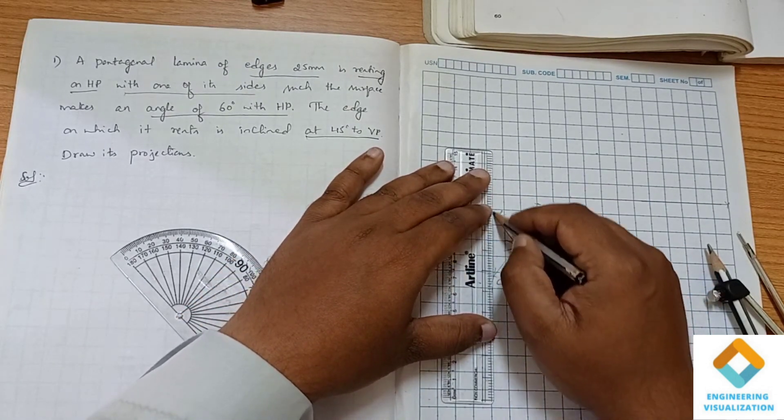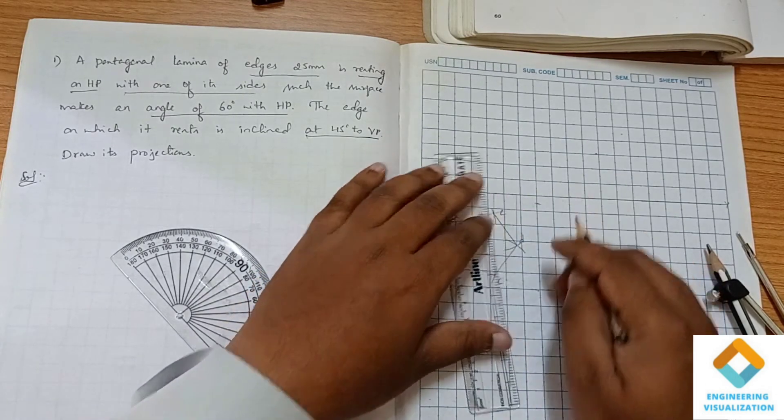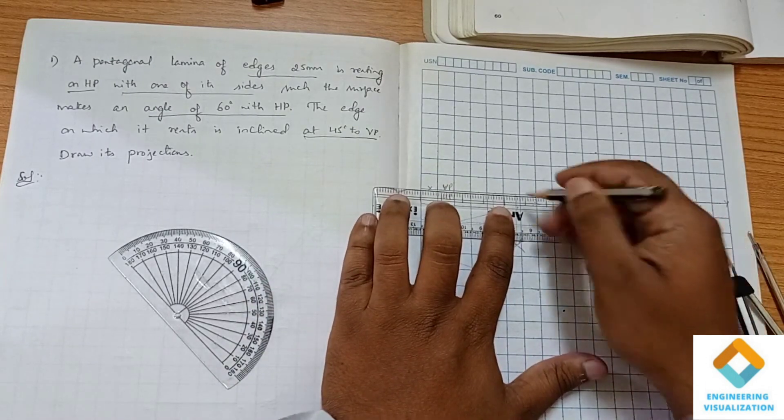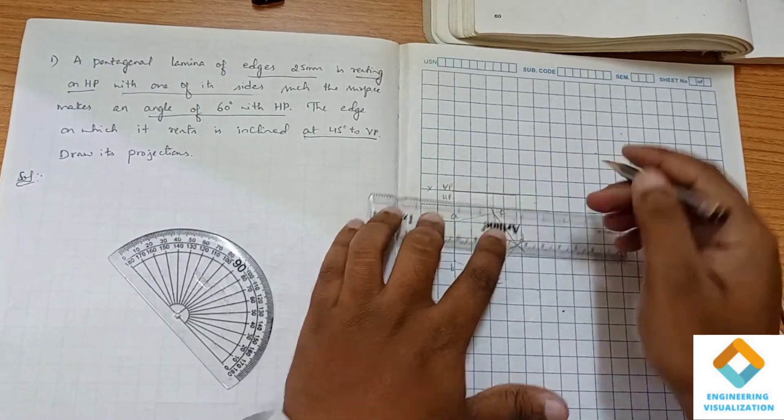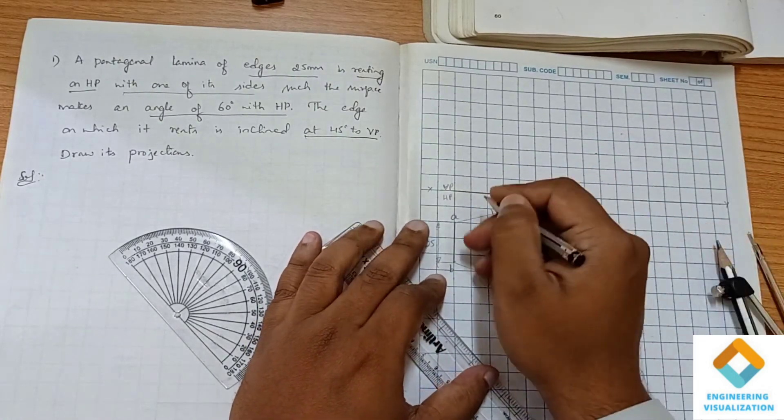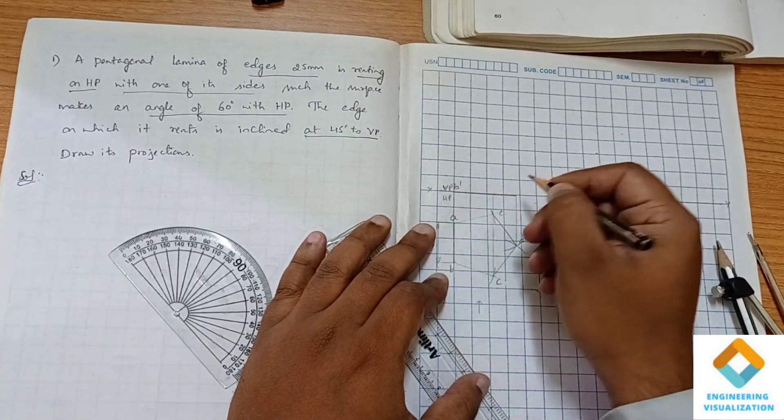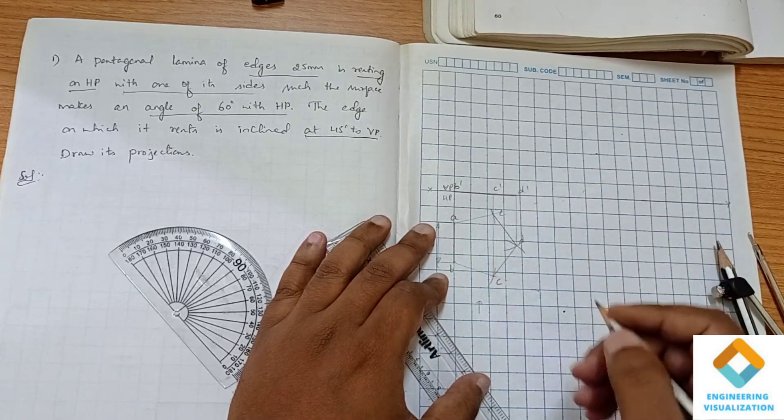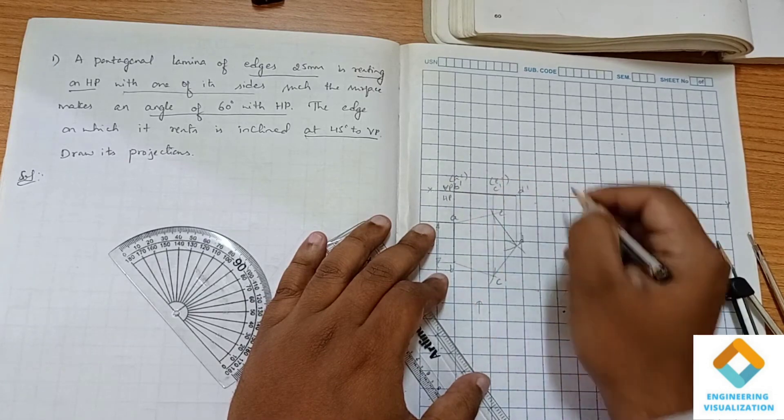After constructing we can remove this part. Now we can show the dimension on one side. Now we will draw the projection lines to construct the front view. The front view is lying here on the XY line. From the front view we are able to see B dash, C dash and D dash visible, but A dash and E dash not visible.